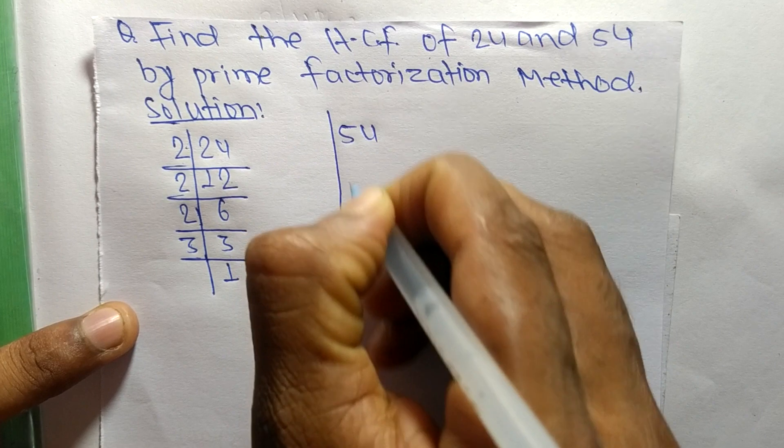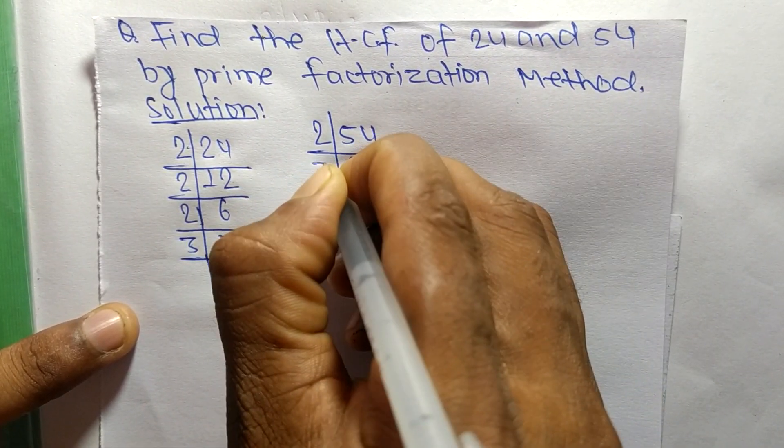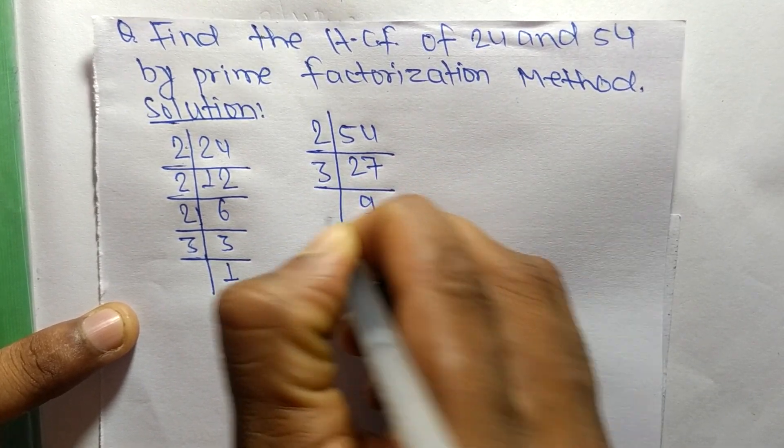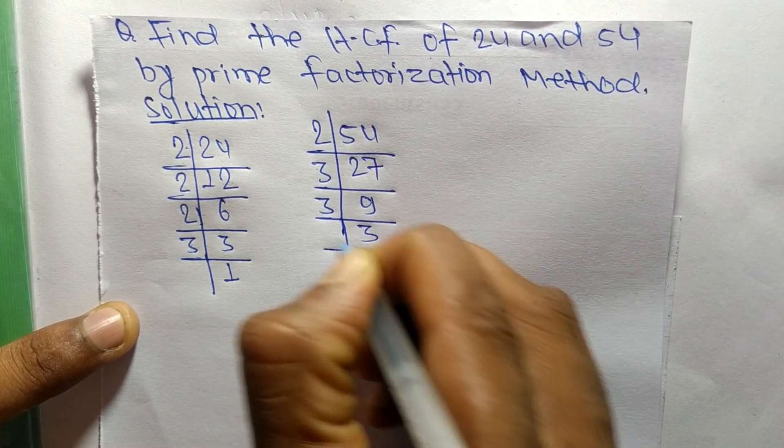The prime factors of 54 are 2 times 27 means 54, 3 times 9 means 27, 3 times 3 means 9, and 3 times 1 means 3.